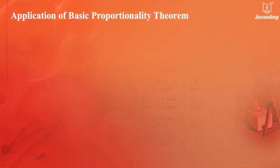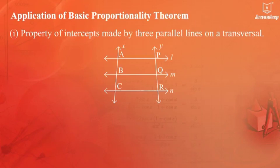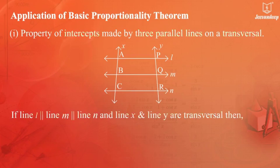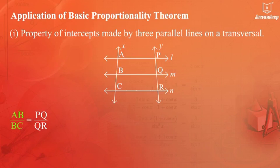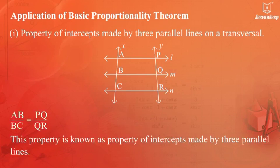Basic Proportionality Theorem 1: Property of intercepts made by three parallel lines on a transversal. If line L is parallel to line M, which is parallel to line N, and lines X and Y are transversals, then AB upon BC equals BQ upon QR. This is known as the property of intercepts made by three parallel lines.